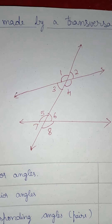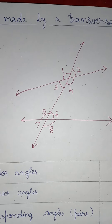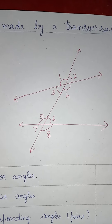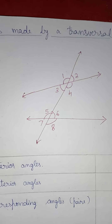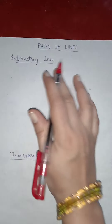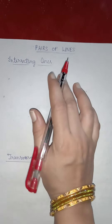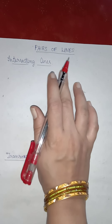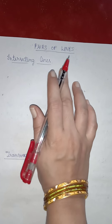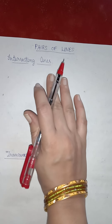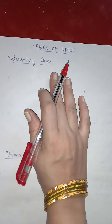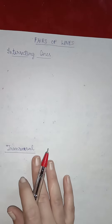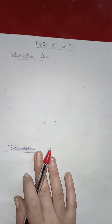Dear students, in this video let us learn about intersecting lines and transversal. Both are formed when you have two or more lines — you can get intersecting lines or you can get a transversal. Let us see what they are.